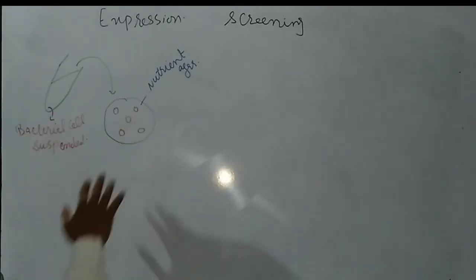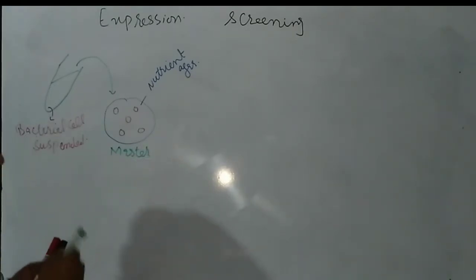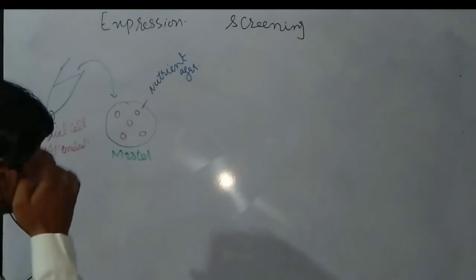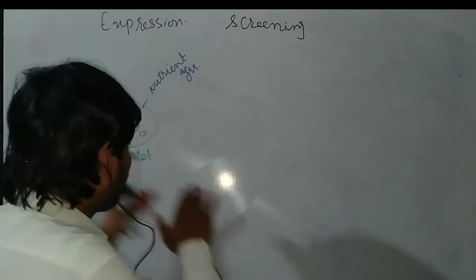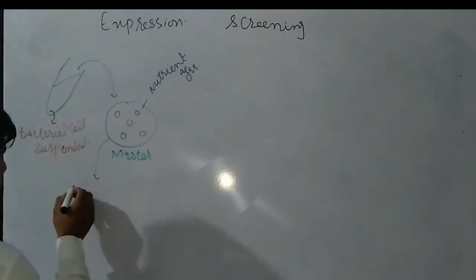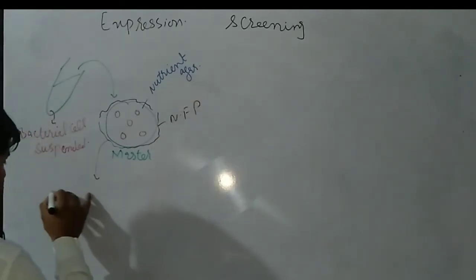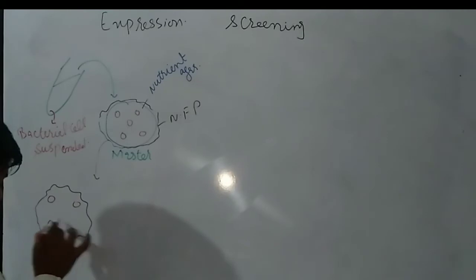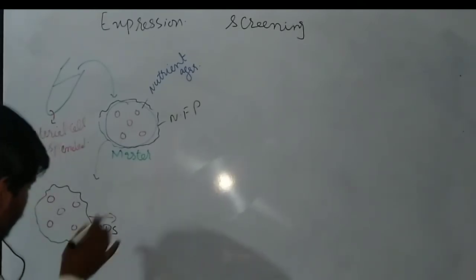After incubation, what we get is called the master plate. We keep this master plate as it is for future purposes. After that, we press a nylon filter paper onto the surface of this nutrient agar plate to take a print of each colony and get a replica. We load the nylon filter paper as you can see, and the colonies are transferred onto the nylon filter paper.